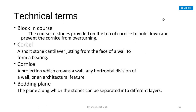The first technical term is block in course. The course of stones provided on top of a cornice to hold it down and prevent the cornice from overturning is known as a block in course.